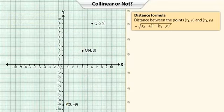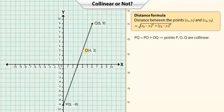Let us look at points P, O and Q. If point O lies on line segment PQ, then P, O, Q are collinear. And we can say that PQ is equal to PO plus OQ.